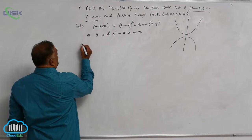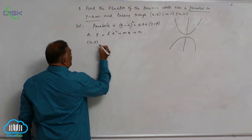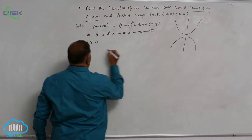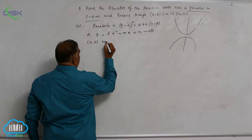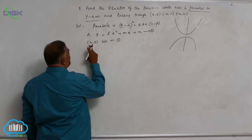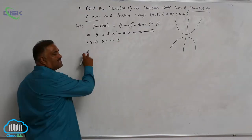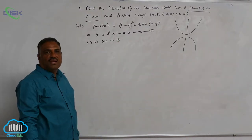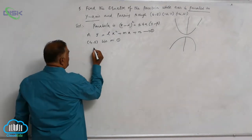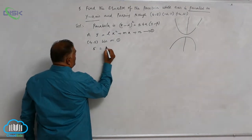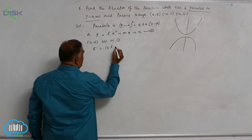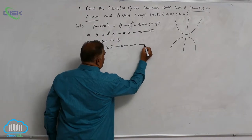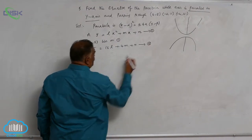The point (4, 5) lies on equation 1. So in place of x, let us substitute 4, and in place of y, substitute 5. So 5 equals 16l plus 4m plus n. Call this equation 2.